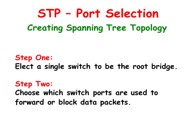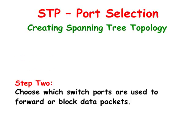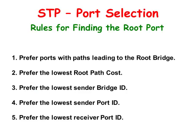As we saw in the previous video, one of the switches had been elected as the root of the spanning tree. As soon as the root has been elected, all non-root switches begin to decide which of their ports will be root ports, designated ports, and blocking ports. Each non-root switch has only one switch port which leads back to the root switch.